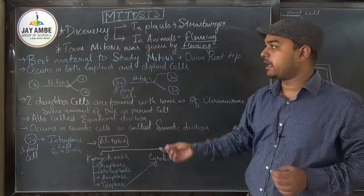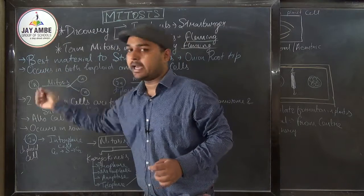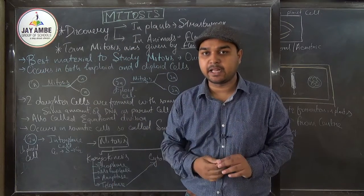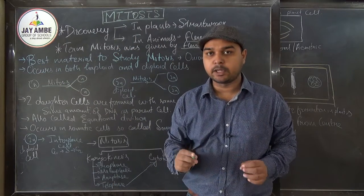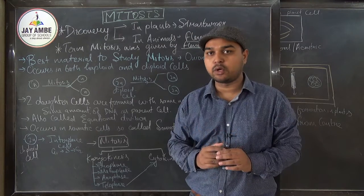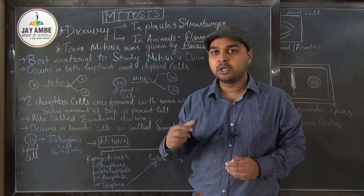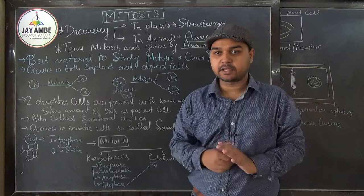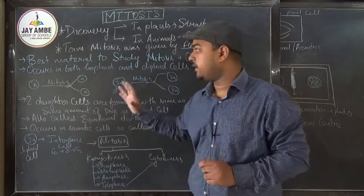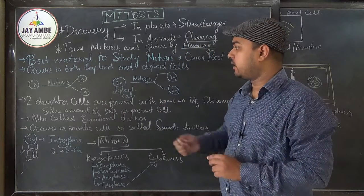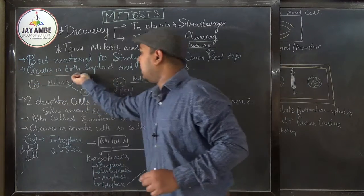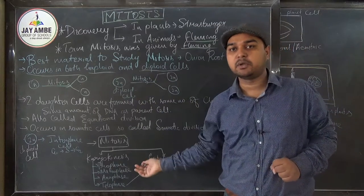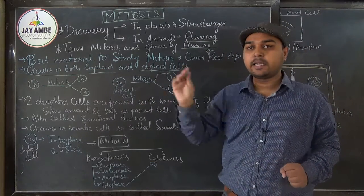Fleming had a very great contribution — he developed meiosis, mitosis, and also gave the term. We will see more about him in meiosis as well. The best material to study mitosis is the onion root tip — we can observe mitosis most clearly in it. Mitosis occurs in both haploid and diploid cells.